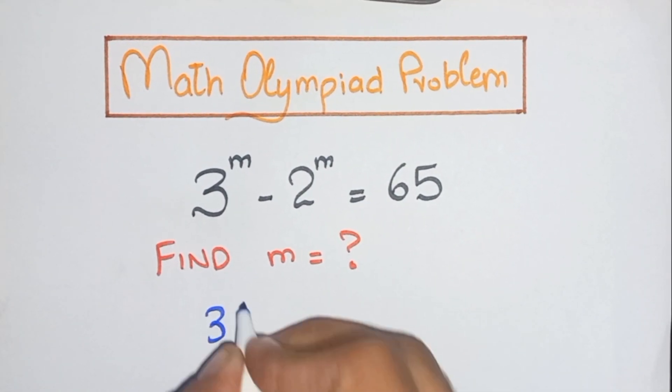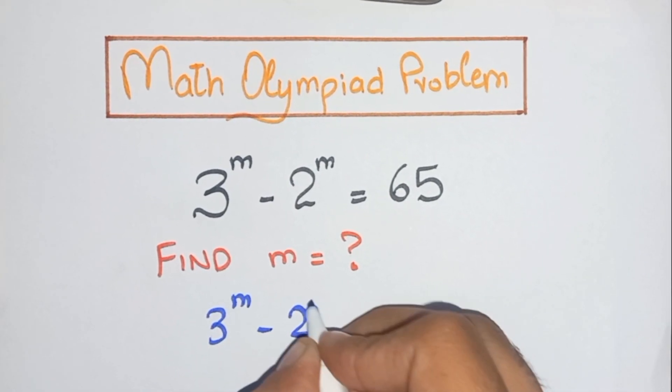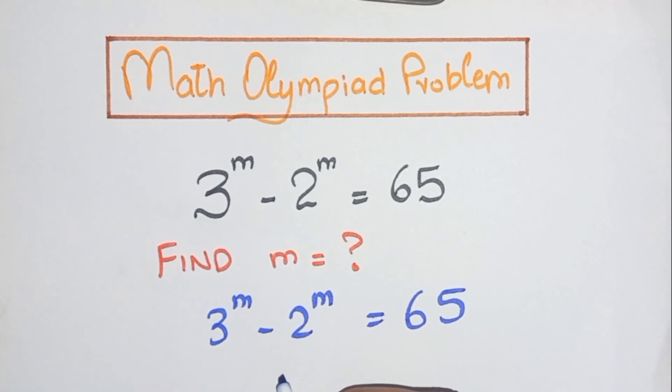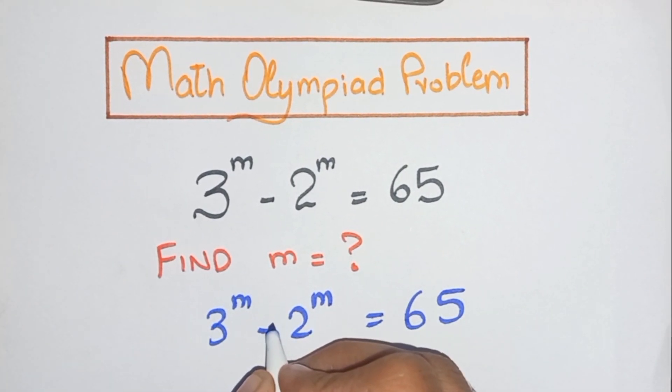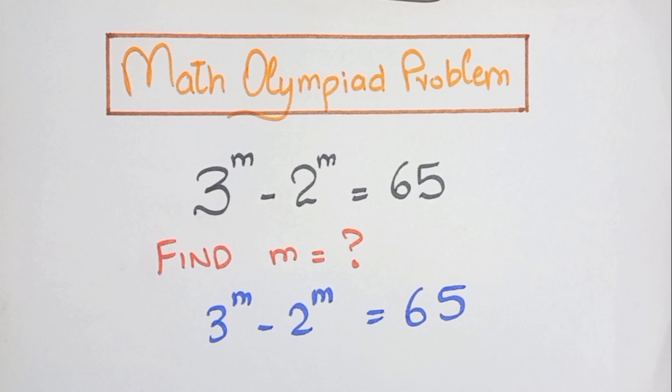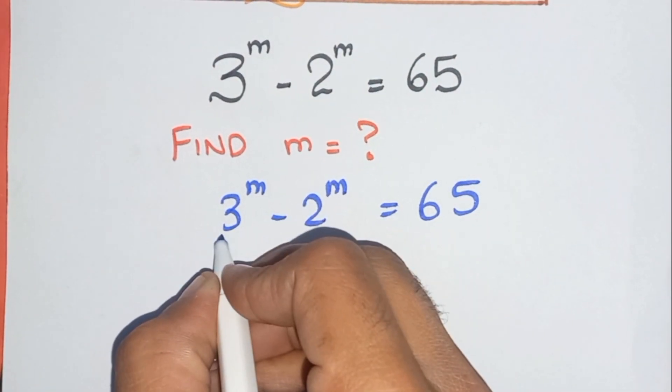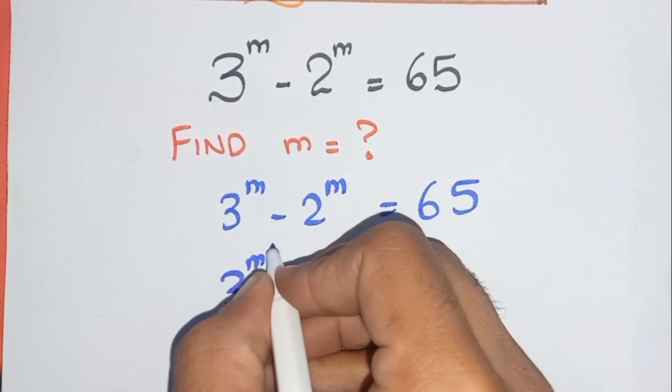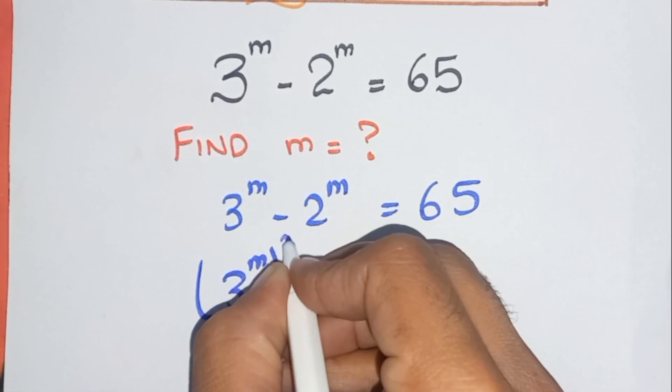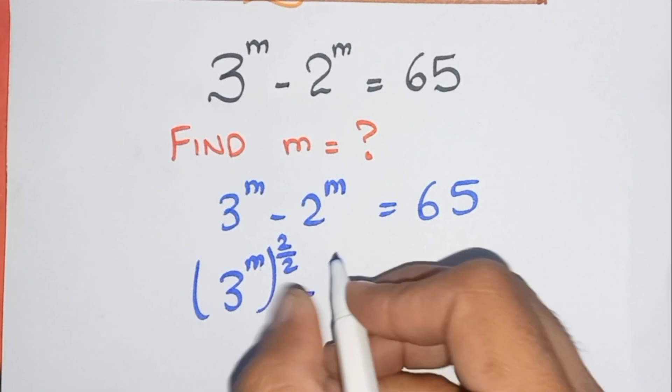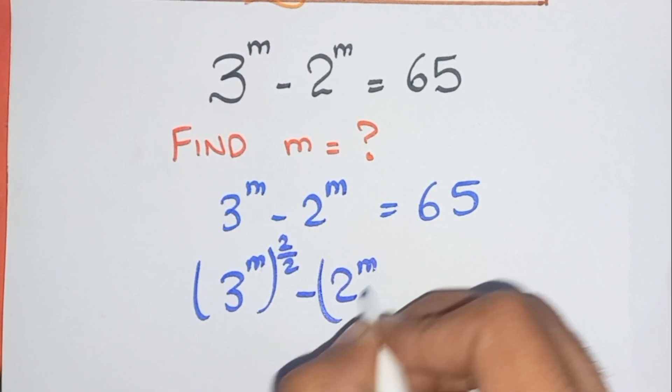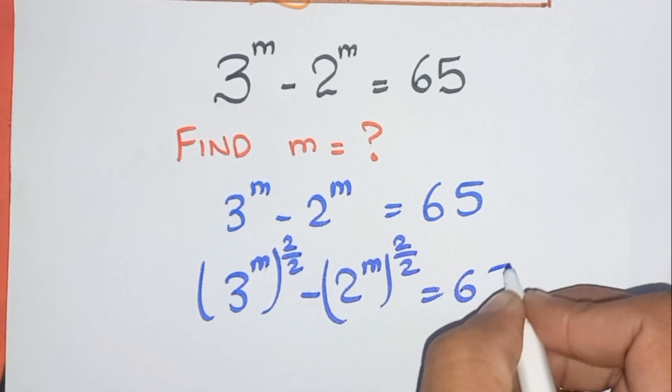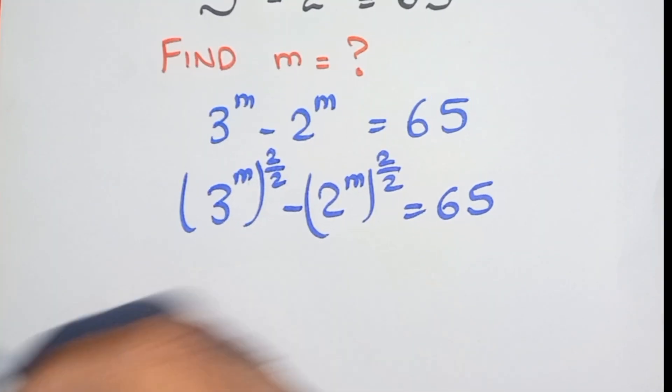First, as we saw 3^m - 2^m = 65, so take everywhere square in 3 and 2. Square and divide power by 2. Again here, square and divide power by 2, and equals 65. As we know that...